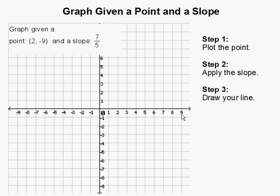Graph given a point and a slope. In this problem, we are going to graph a line that runs through our point 2, negative 9 that has a slope of 7 over 5.